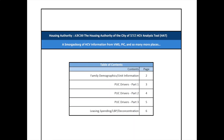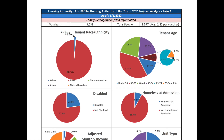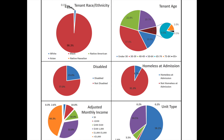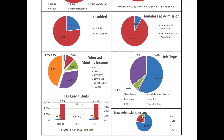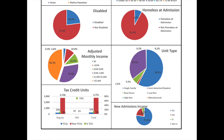After the introductory first page, page 2 provides a demographic breakdown of program participants. This includes the Head of Household's Race, Ethnicity, Age, Disability Status, Homeless Admissions Status, Monthly Income, New Admissions Income, and Rent Burden. The New Admissions Income can be a useful data source to ensure that 75% of new admissions are extremely low income.